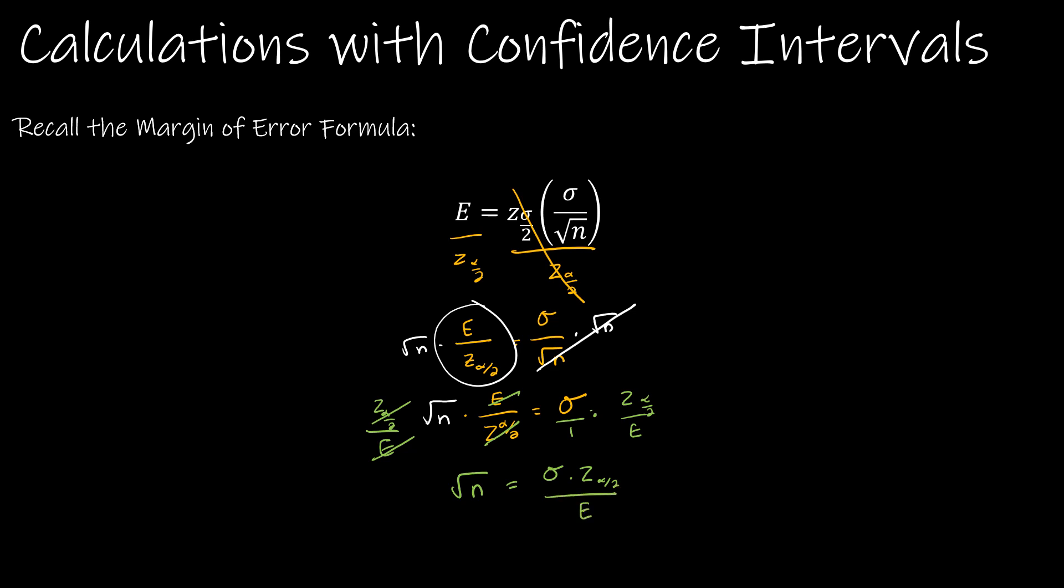And now I just want n. So I'm going to square each side. So my solution is that n is sigma times critical value divided by E quantity squared. So this is how we're going to find n if we are given sigma or critical value and the margin of error.